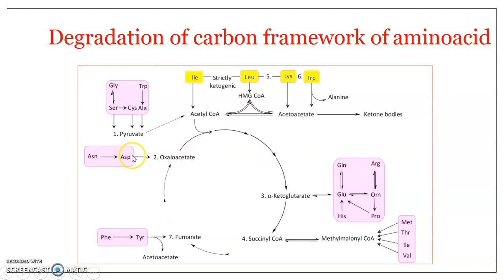Aspartic acid and aspartate are converted to oxaloacetate. Glycine, serine, cysteine, alanine, and tryptophan are converted to pyruvate, which will undergo oxidative decarboxylation to produce acetyl-CoA. All of these products, in one way or another, become part of the Krebs cycle and finally enter it. The five major products are: acetyl-CoA, alpha-ketoglutarate, succinyl-CoA, fumarate, and oxaloacetate — produced during the degradation of the carbon framework of the different amino acids.